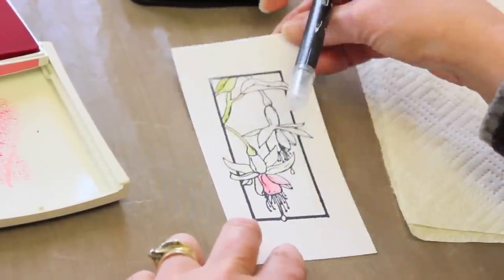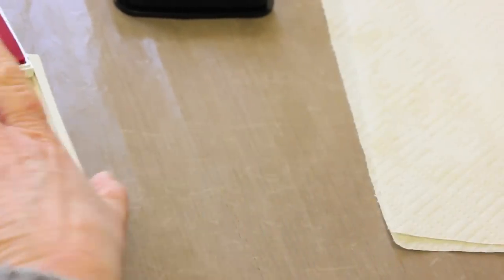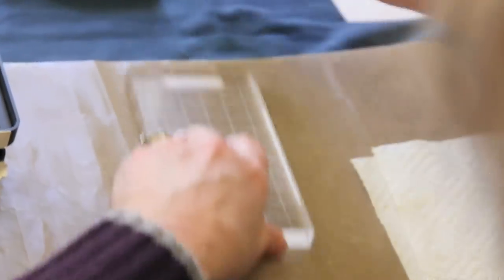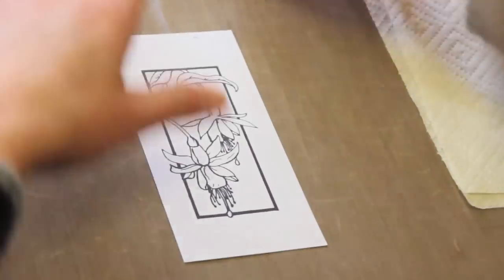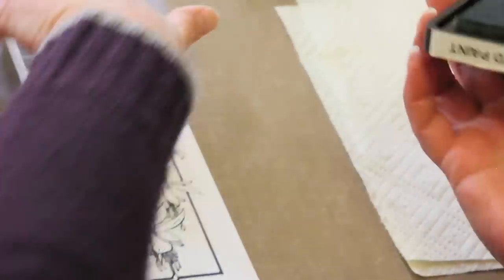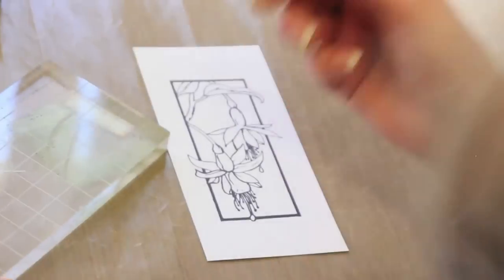Now I'm going to stop that one there and show you how to get the same effect using your distress inks. It's much the same, but we'll take just an acrylic block and your ink pad and just swipe that like that on there. You can see now that I've got some green on that acrylic block, and that gives me the ink to pick up for coloring.